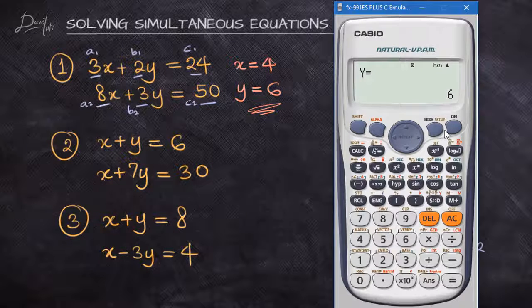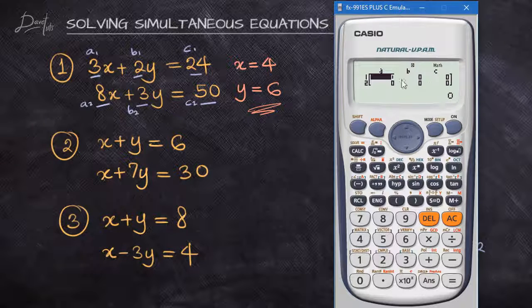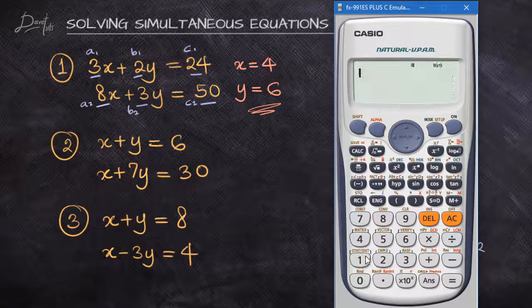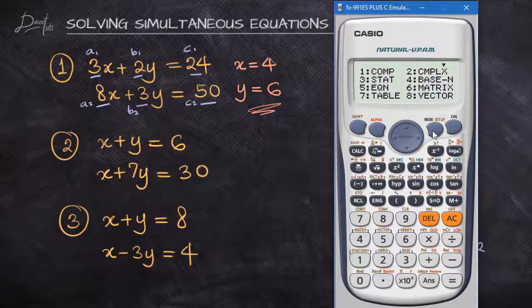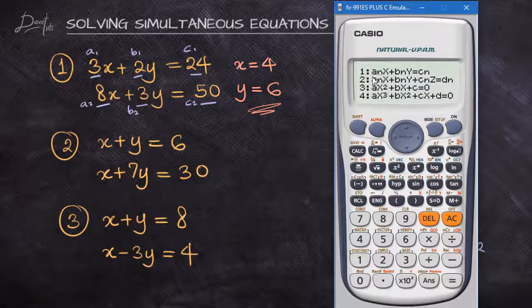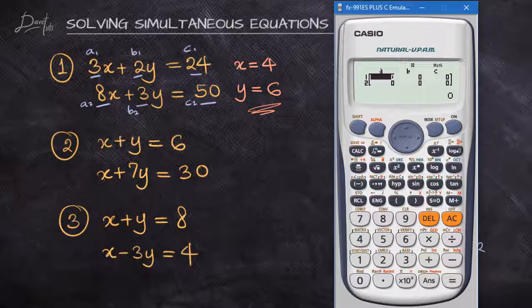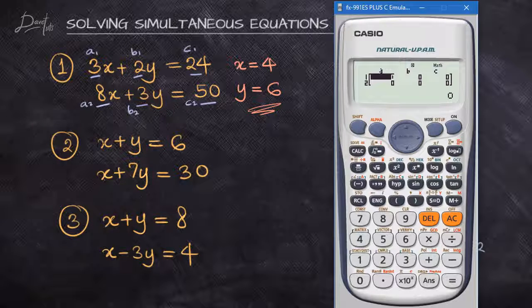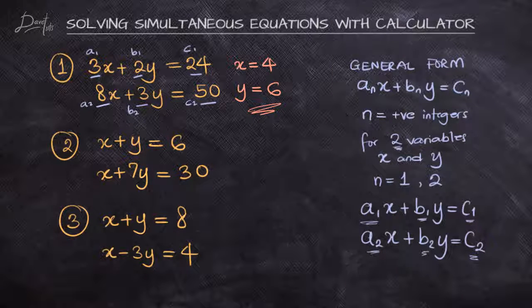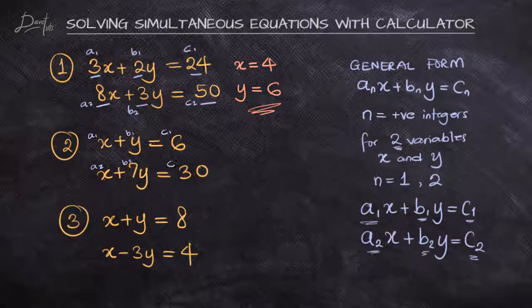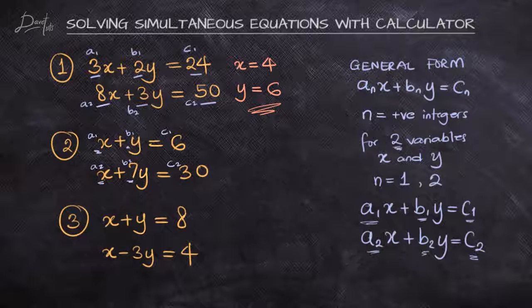Now looking at this second question, the values I input are still there, but you can press AC to clear that or go back to your MODE to the normal setup, then go to MODE, put in 5 to operate the equation, and 1 to go to the format where we'll be using to solve our question. If we're looking at question number 2, we can see that our a₁, b₁, and c₁, and the other one for the second equation, are easily noticeable. The coefficients of x and y and the constant are the values that we're going to input.